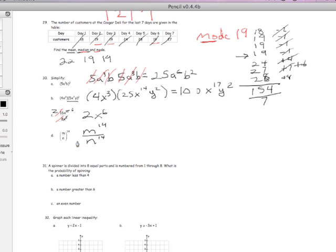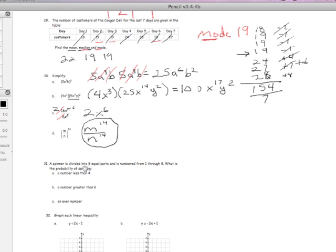If you can make out what we have here of 2 times x to the 6th. And here we have m to the 14th over n to the 14th. Quite frankly, it says to simplify, I wouldn't fight anyone about this, but I don't see how that's much simpler than the given.